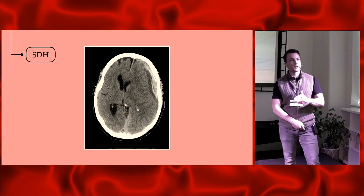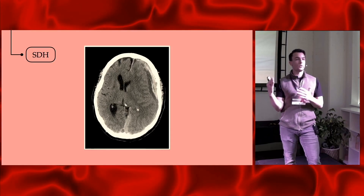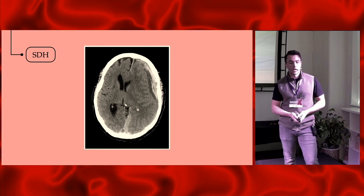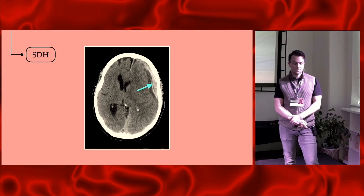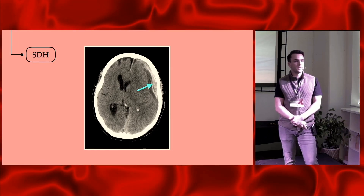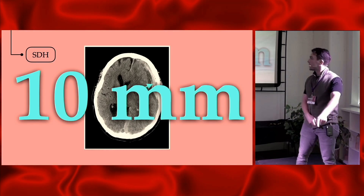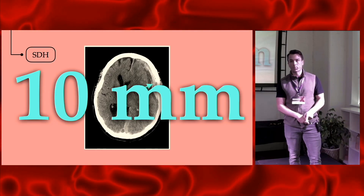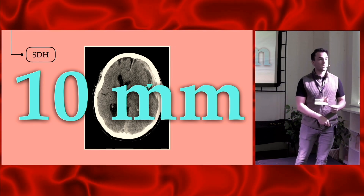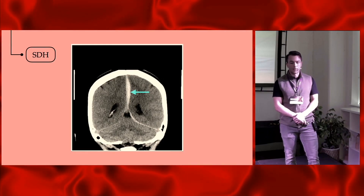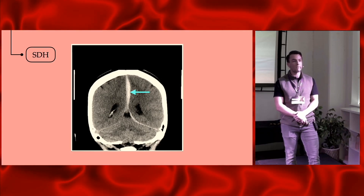Subdural hematoma occurs when there's an insult to the bridging veins underneath the dura mater. As we age, the gap between the dura and brain expands, so older patients who fall often get subdurals. On this CT cut there's a lot going on — here's the subdural, but also significant midline shift. The key number here is 10 millimeters: according to the Brain Trauma Foundation, that is the threshold at which neurosurgical intervention is needed. Also note: a parafalcine subdural hematoma can be isolated to just that area — make sure you're looking at all the dura when searching for subdurals.